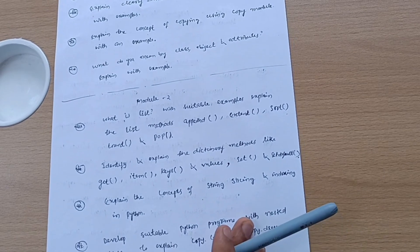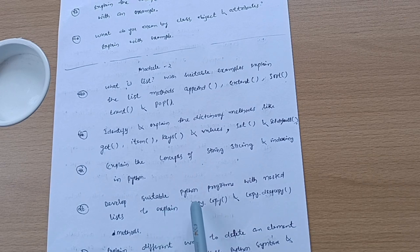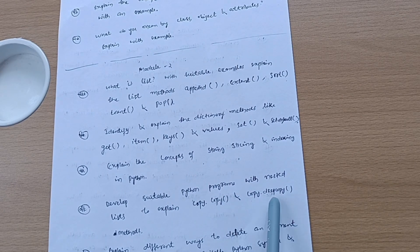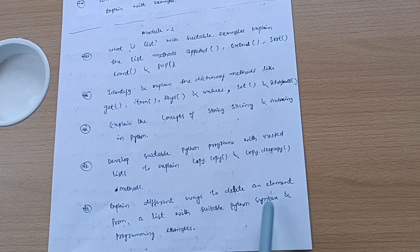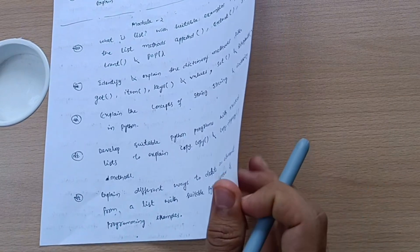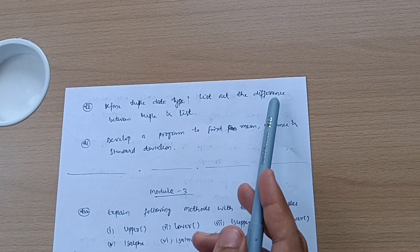Identify and explain the dictionary methods like get, item, keys, values, set, and setdefault. Explain the concepts of string slicing and indexing in Python. Develop suitable Python programs with nested lists to explain copy.copy and copy.deepcopy methods. Explain different ways to delete an element from a list with suitable Python syntax and programming examples.